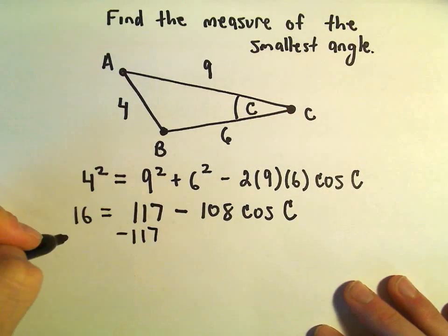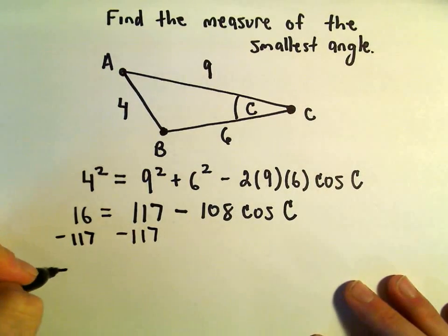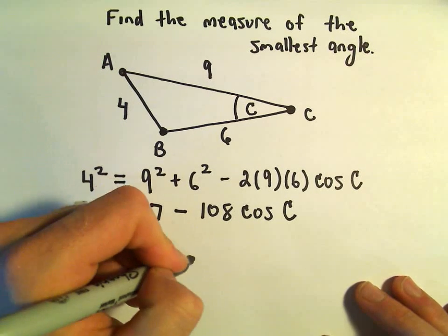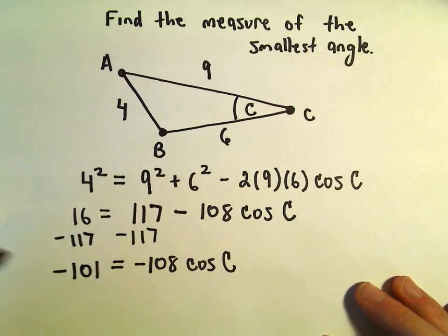We can subtract 117 from both sides. That leaves us with -101 on the left, which equals -108 times cosine of C.